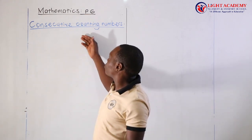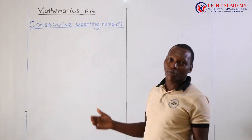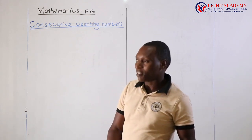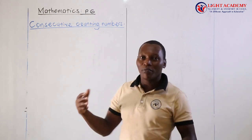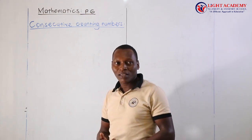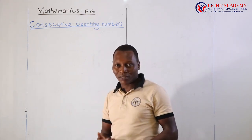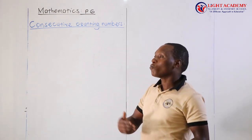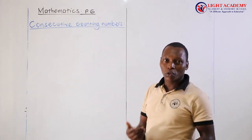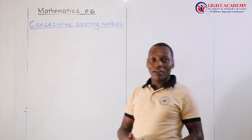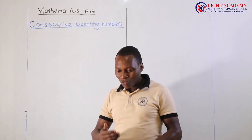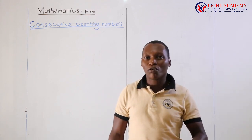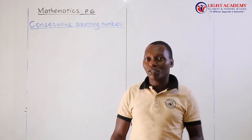I will go straight and talk about consecutive counting numbers. You remember in Primal 5, we talked about counting numbers — these are natural numbers that we use in counting. For example, numbers like 1, 2, 3, 4, 5, 6, and many others. Those numbers in their right order, when you don't skip them, we call them consecutive counting numbers.